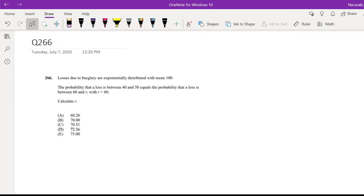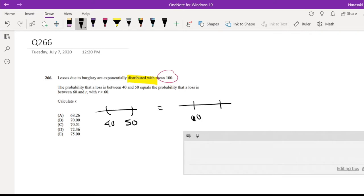Assuming that you already attempted it, let's just dive right in. The question asks, the losses due to burglaries are exponentially distributed with a mean 100. The probability of losses between 40 and 50 equals the probability of losses between 60 and R, where R is greater than 60. So R is greater than 60, like that. Okay, calculate R.